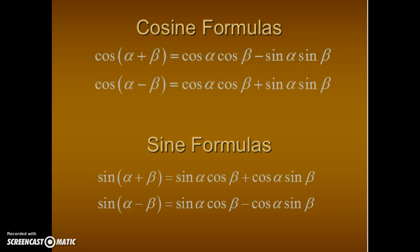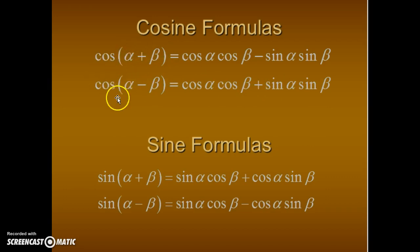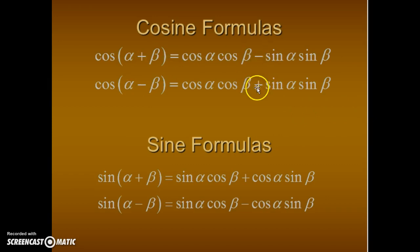We'll do examples to make sure you understand, but first write these formulas down and then we'll practice how to use them. Here's the cosine difference formula: the cosine of alpha minus beta equals cosine alpha times cosine beta plus sine alpha times sine beta. The terms are equivalent; the only difference between the sum and difference formulas for cosine is the plus or minus sign between those middle terms.